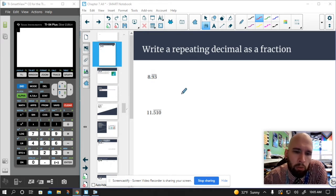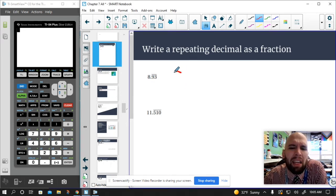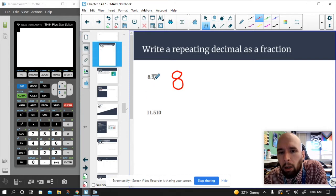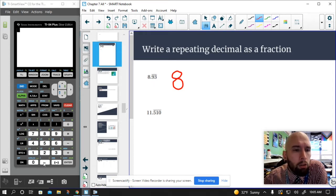So I have eight. That doesn't repeat. I don't really care about eight. Eight is eight. Eight, eight, eight is great. You can write it this way. You can write it that way. I'm just going to write out eight. What I care about is 0.93. So this is what I'm going to do.